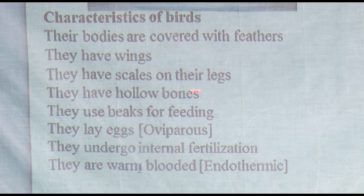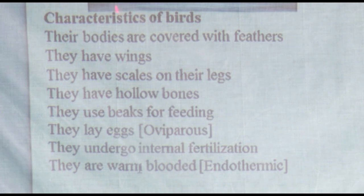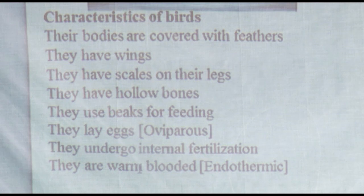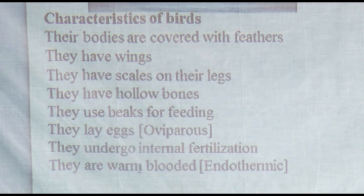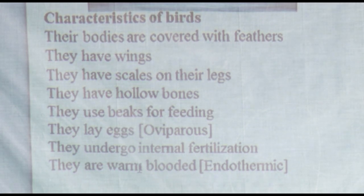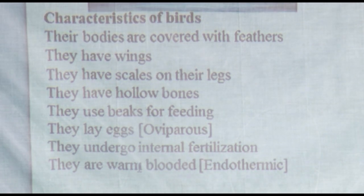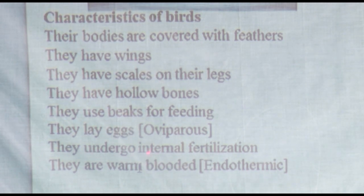Birds use beaks for feeding. It's not called a mouth — this is the beak in birds. Birds lay eggs, which is termed as oviparous. Oviparous animals are animals that lay eggs. Birds, amphibians, and reptiles are all oviparous. They undergo internal fertilization — for birds, mammals, and reptiles, the sperms and the ova fuse or join within the oviduct, inside the body. This makes it internal fertilization, different from amphibians and fish.